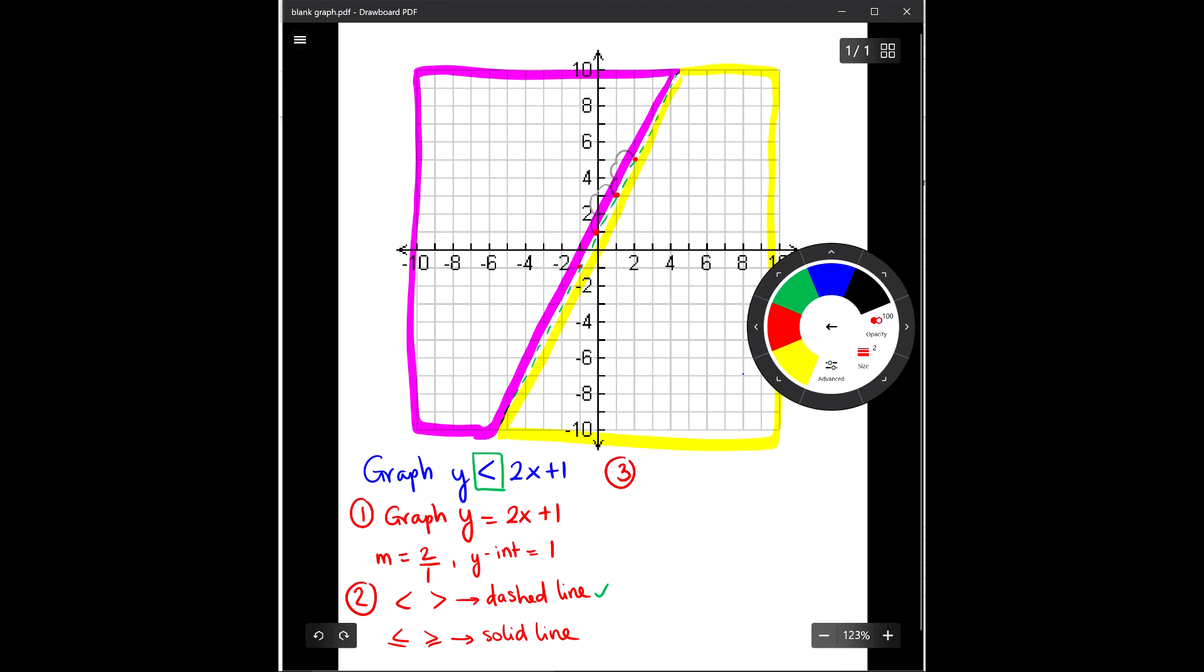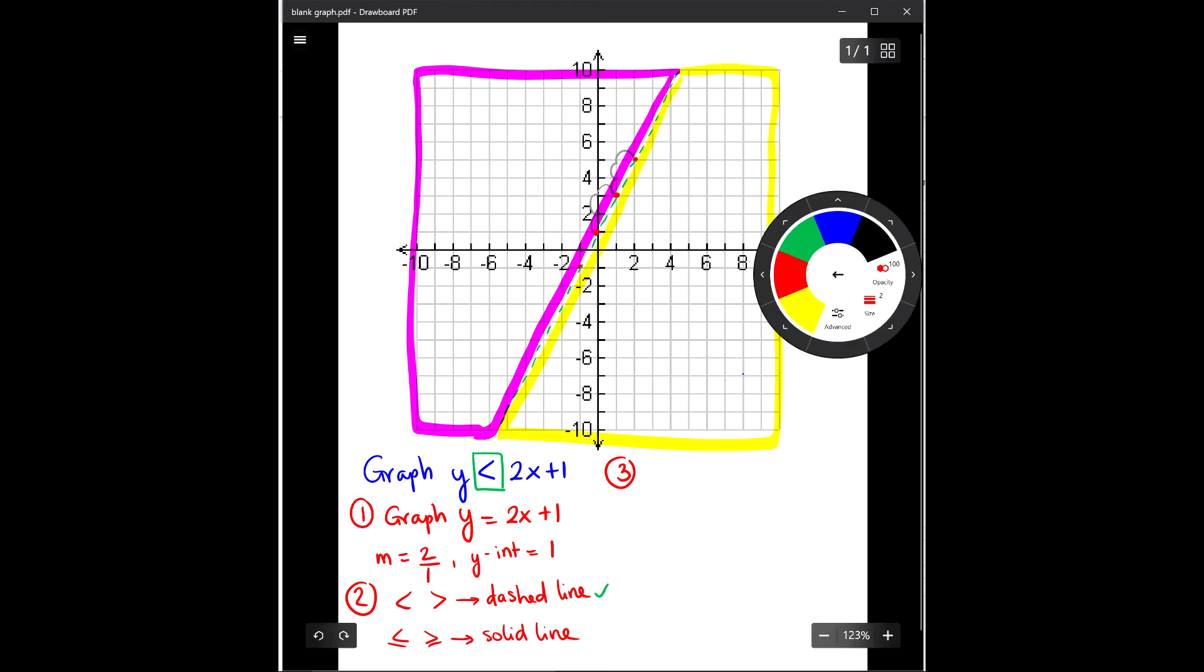Step number three, you will pick a point, it can be any point. Usually you pick a point that belongs to either region, either pink region or yellow region. Try to avoid to pick a point that lies on the green line because you will be confused with it. So I will pick a point, let's say three comma one. That point is right here, three comma one.